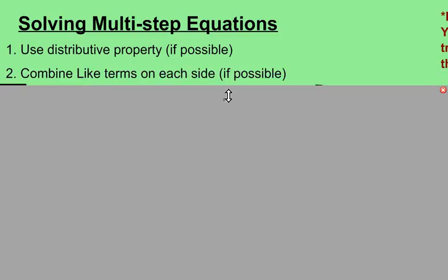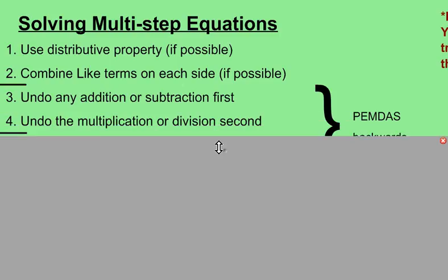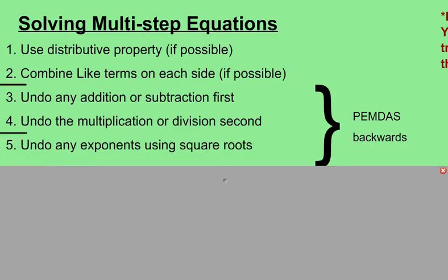Then if there's any terms that you can combine anywhere on either side, so on separate sides, you can combine them. Alright, then you get into undoing any addition or subtraction. So if you have the x's on the left side, the x term on the left side, there's any addition or subtraction you need to get rid of, any numbers added or subtracted, do that first. Alright, and then undo the multiplication or division, that's the coefficient of that variable. And then finally, if there are any exponents on the variable, you can get rid of that by using square roots.